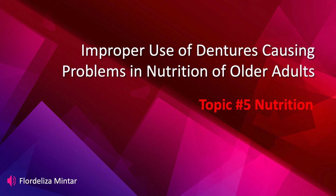The topic we will be presenting today is related to topic number five, nutrition. The title of our presentation is 'Improper Use of Dentures Causing Problems in Nutrition of Older Adults.' We chose this topic because some of our team members are working in a nursing home or long-term care facility, and this is one of the problems the team wanted to address. According to the World Health Organization 2019, malnutrition is a global problem and it is the leading cause of death and disease globally. We decided to make this topic our campaign to raise awareness among healthcare providers and patients in maintaining nutrition and using dentures.